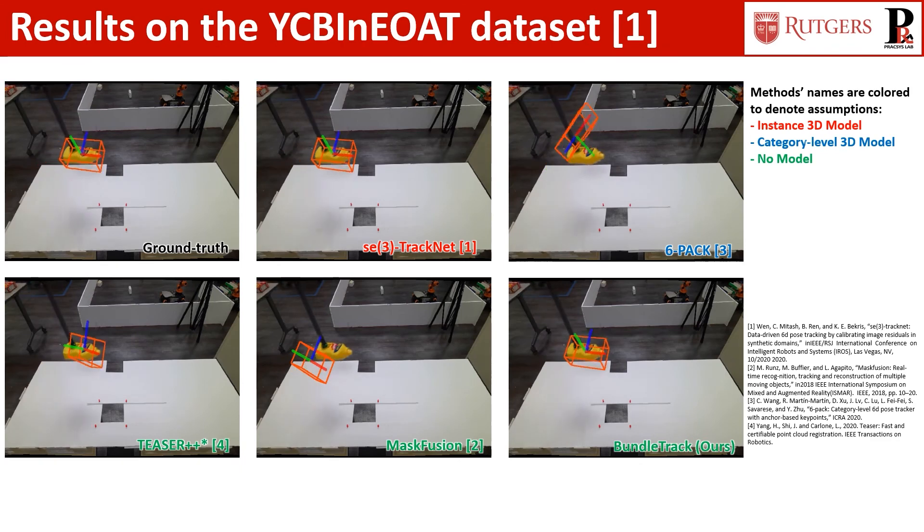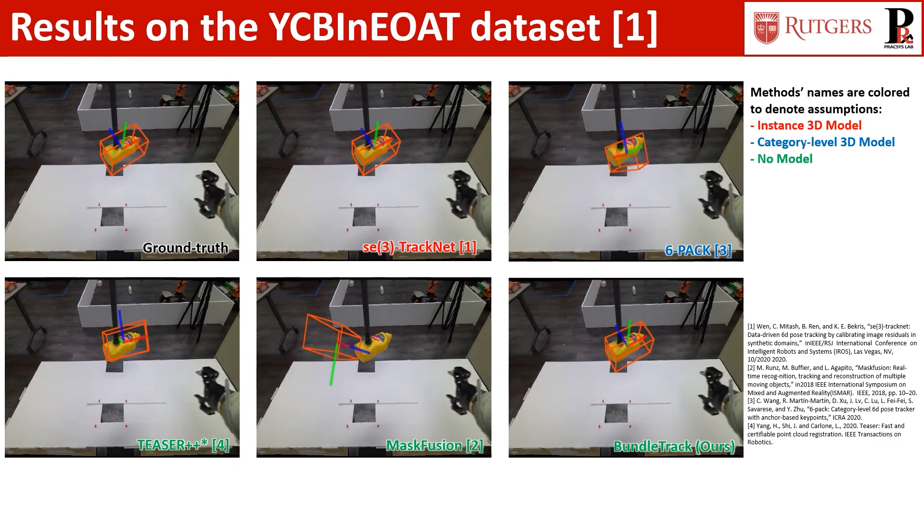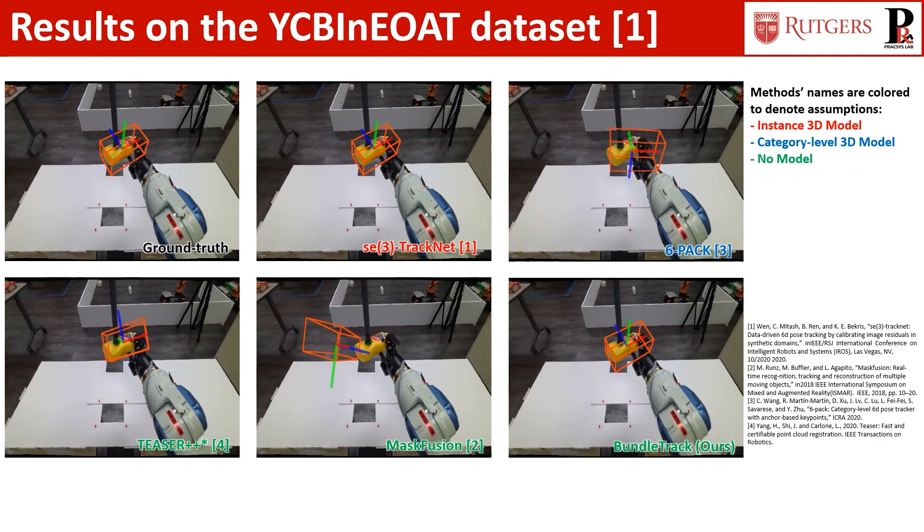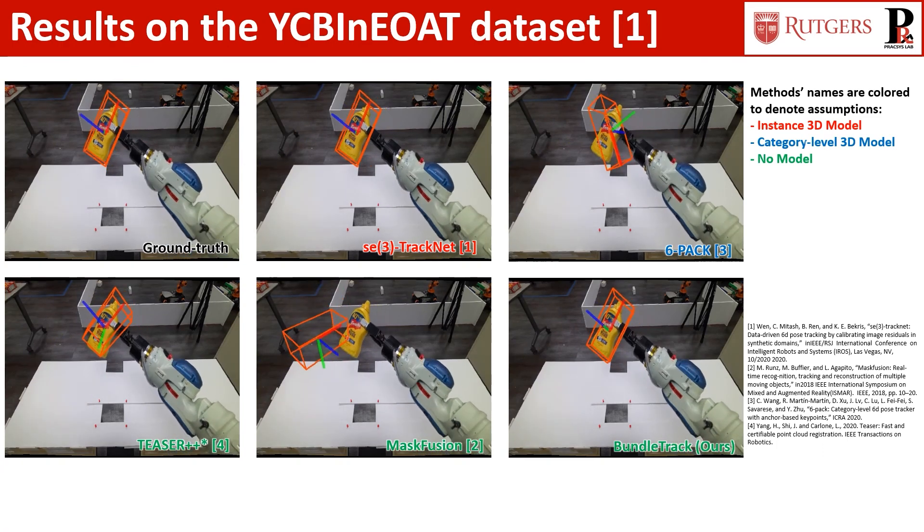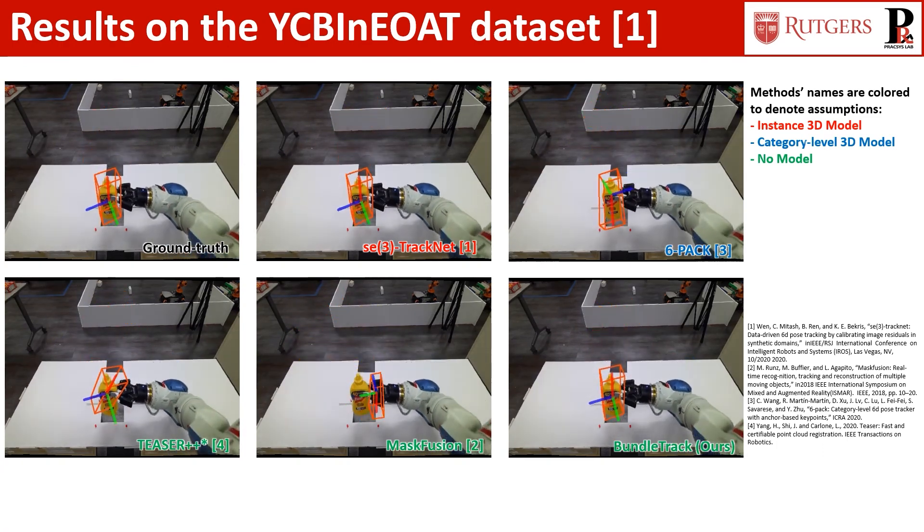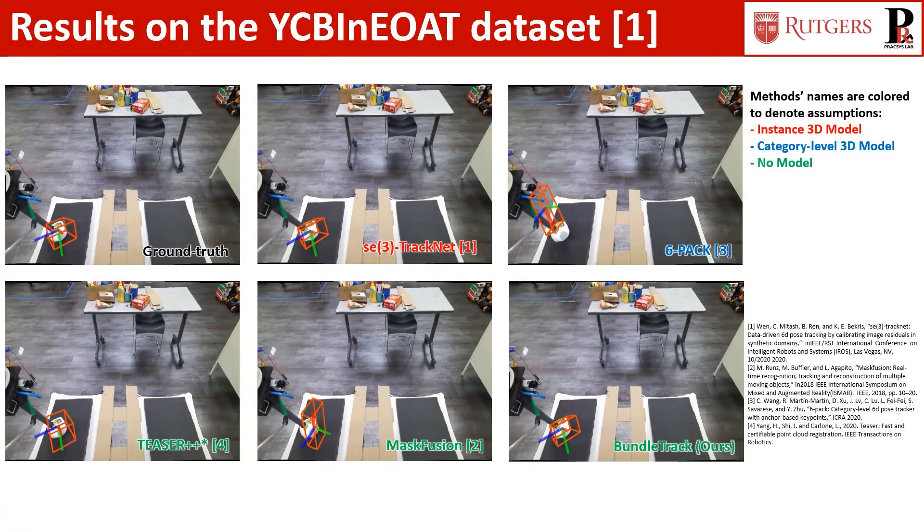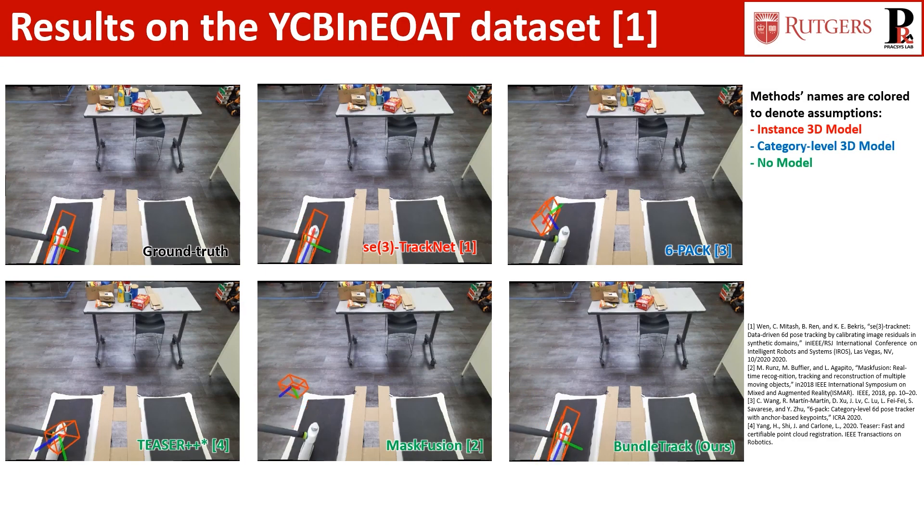Here shows the qualitative comparison of BundleTrack against se(3)-TrackNet, se(3)-TrackNet, T3++, and MaskFusion. The same evaluation protocol as se(3)-TrackNet is followed, where the first frame's pose is initialized from ground truth. During tracking, no reinitialization is allowed.